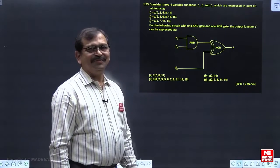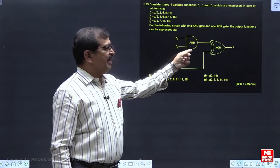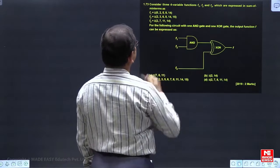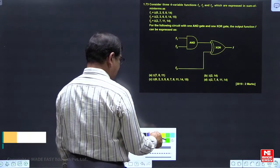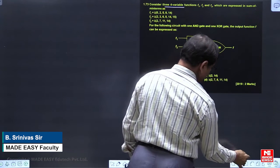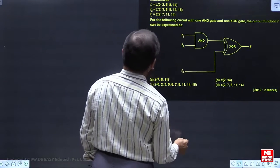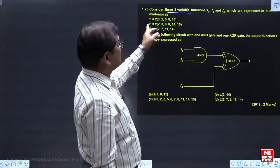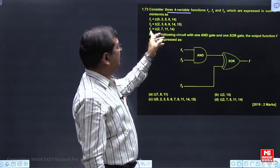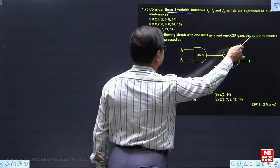In this question, if you look, a small circuit is given. The circuit may indicate this is an exclusive OR, right. So what is the question? Consider 3, 4-variable Boolean functions. So here we are having the functions f1, f2, f3. These functions are basically on 4 variables. For the following circuit with one AND gate, one exclusive OR gate.